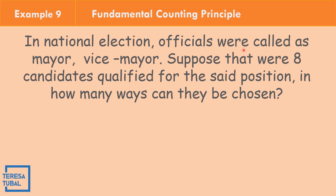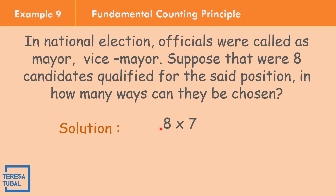In a national election, officials to be chosen are mayor and vice mayor. Suppose eight candidates are qualified for these positions. In how many ways can they be chosen? There are two positions. For mayor we have eight options; once the mayor is filled, seven candidates remain for vice mayor. So 8 × 7 = 56 ways.